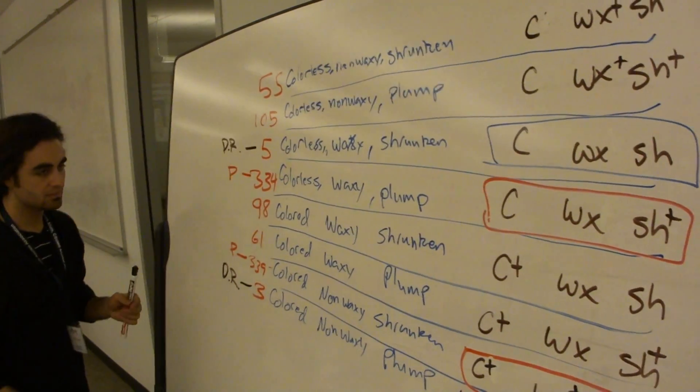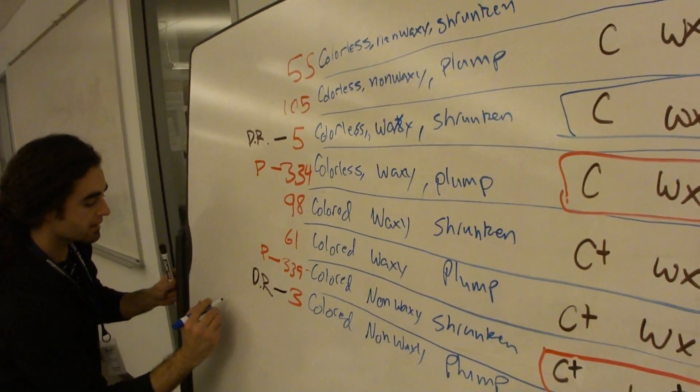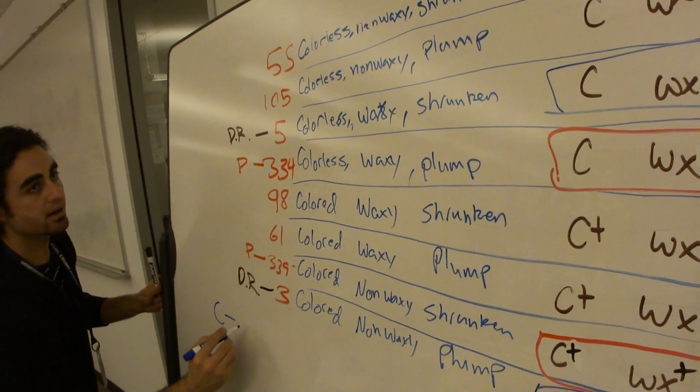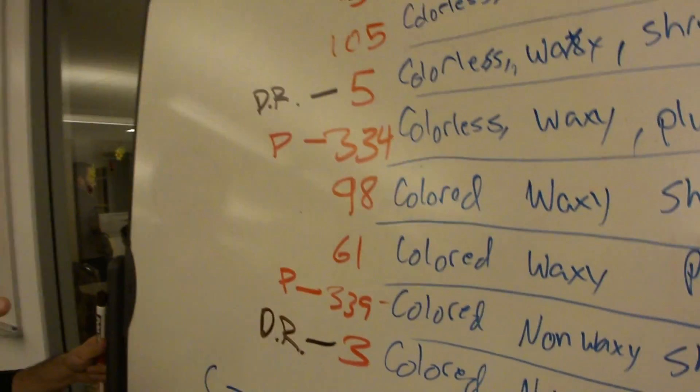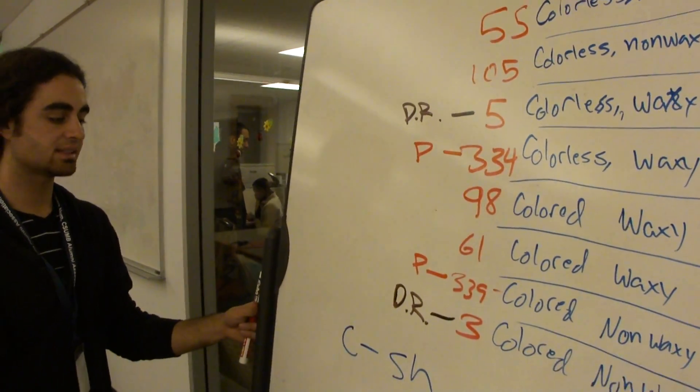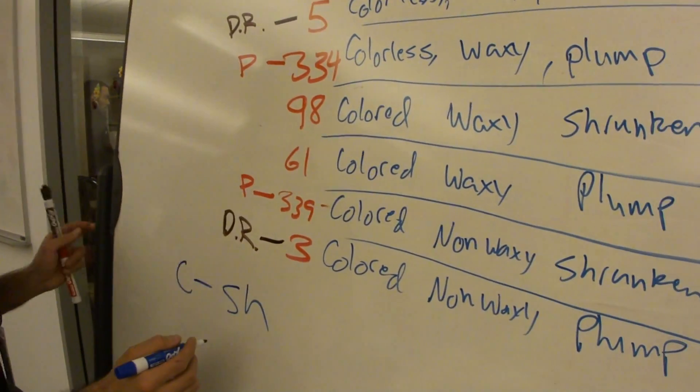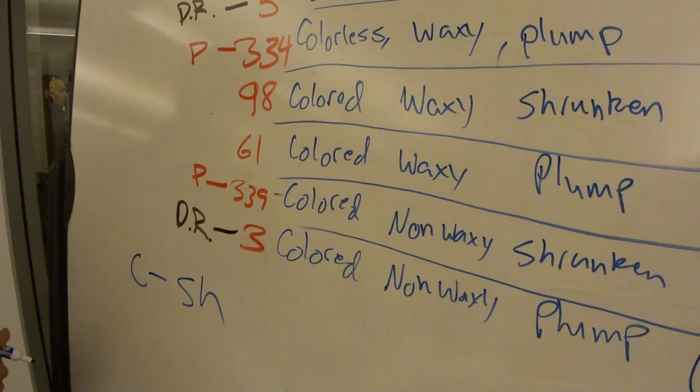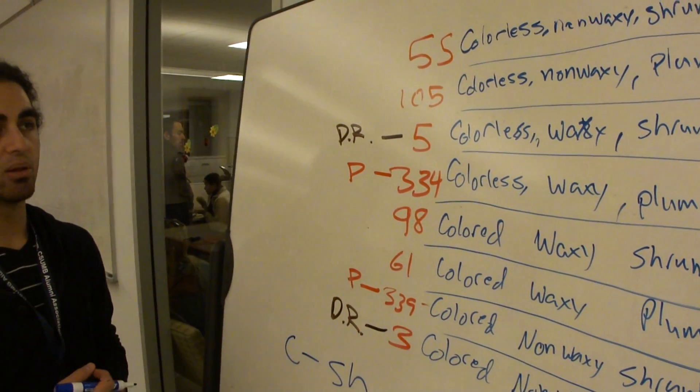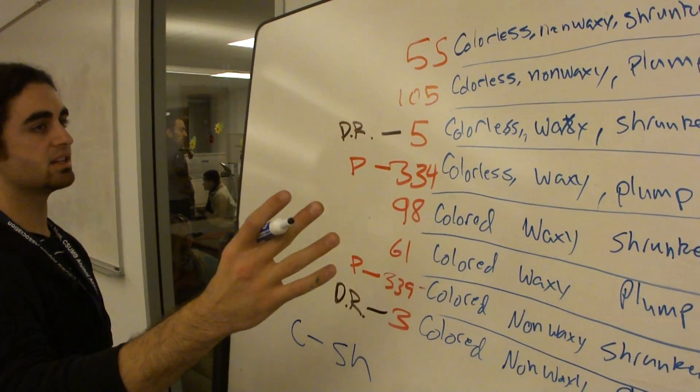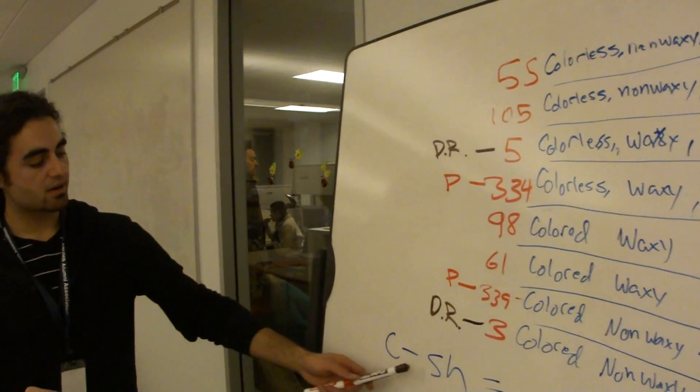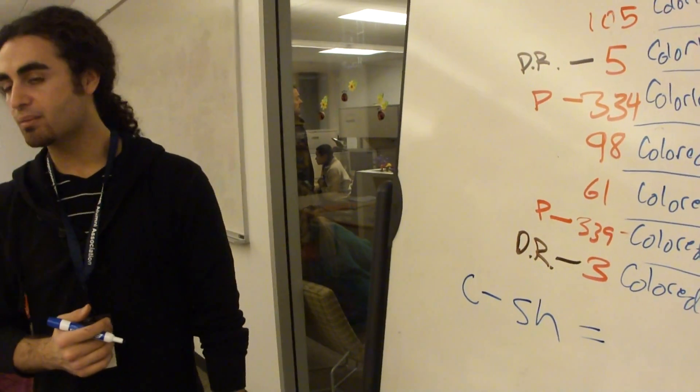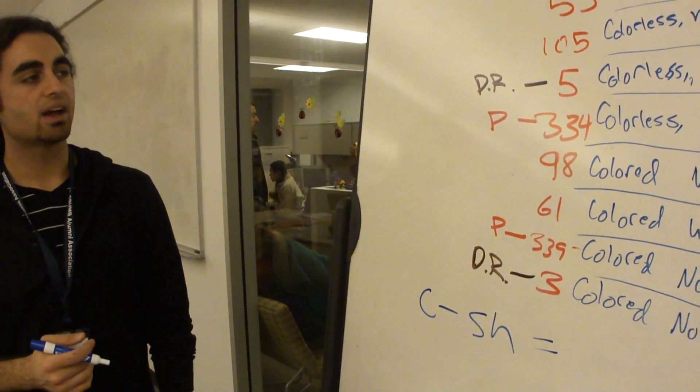So we're going to get our recombination frequency between C and SH and then SH and WX and then C and WX. So each of those two distances. Yeah, it's like the three different ones available. C to SH, SH to WX, C to WX. Okay. So if we want to get our recombination frequency between C and SH, how do we do that?